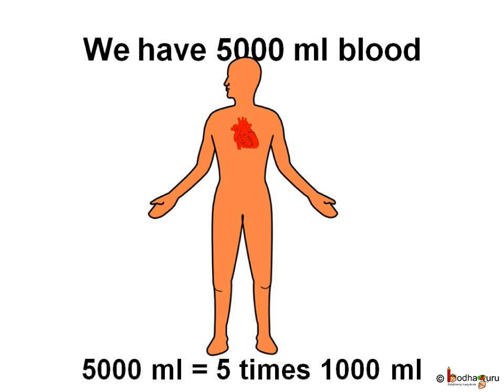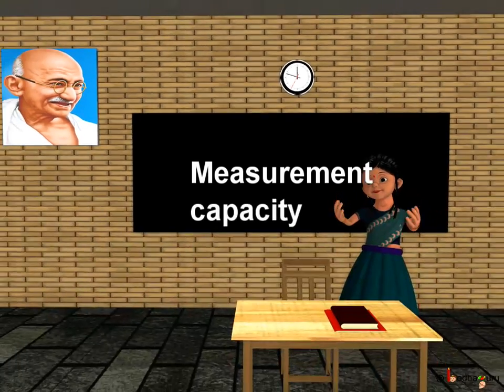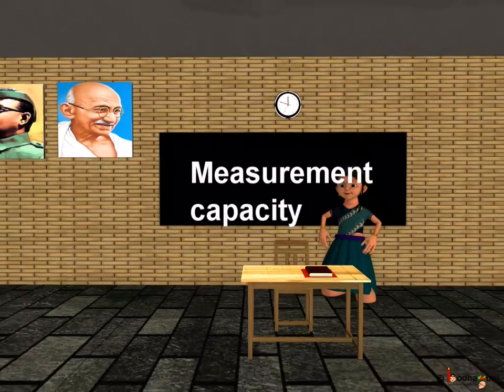By the way, our body has roughly 5 litres of blood, which means 5 × 1000 ml = 5000 ml. That is why some kind people donate a little blood — that is 250 ml — to save someone else's life. That's all for now. Bye bye children.